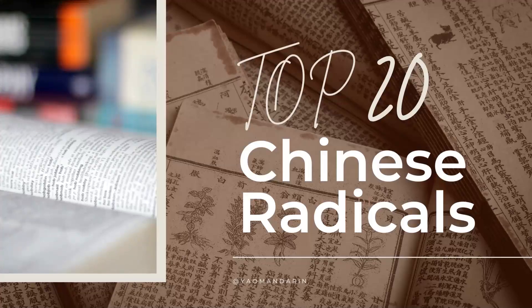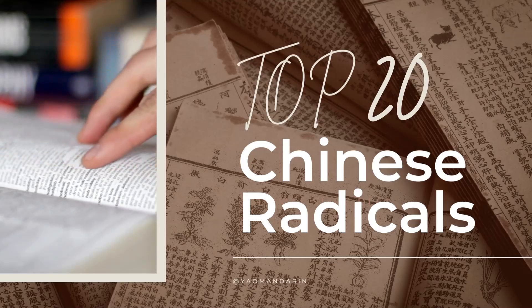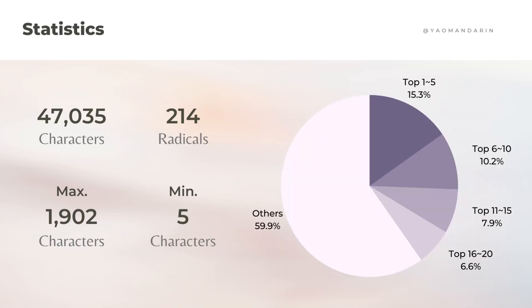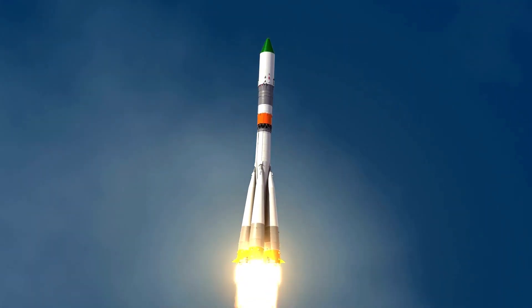Nihao! This video is an introduction to the top 20 Chinese radicals. Based on the Kangxi dictionary, around 47,000 characters are divided among the 214 radicals, but the distribution is not equal. The top 20 Chinese radicals cover roughly 40% of the characters. You'll boost your Chinese reading ability after knowing them.